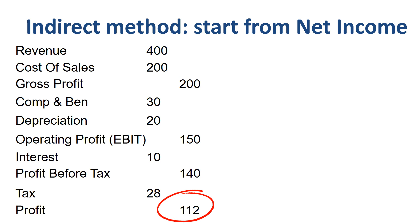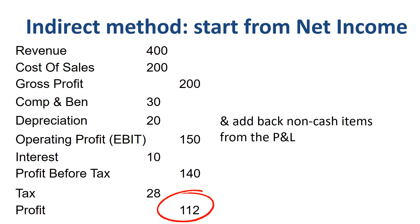The next step in the indirect method is to look for any non-cash items in that P&L. In this example, the only non-cash item is depreciation, which is 20. Depreciation is the accounting process of allocating the purchase price of tangible assets to current expense. As you do not pay depreciation to anyone, but instead deduct the amount from the PP&E or fixed assets balance on the balance sheet, finance people would call this a non-cash item.